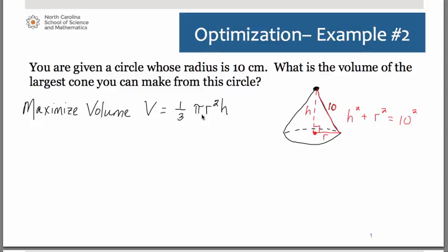What would be really easy, notice how we have an r² in our primary equation, we could simply eliminate that because we know r² from our Pythagorean theorem is simply 100 - h². So in place of the r² in our primary equation, we're going to substitute 100 - h².